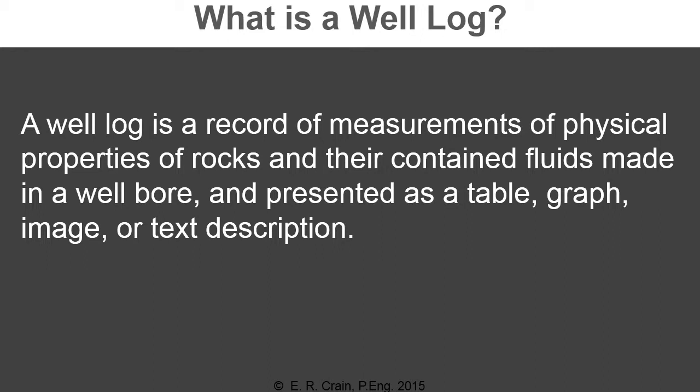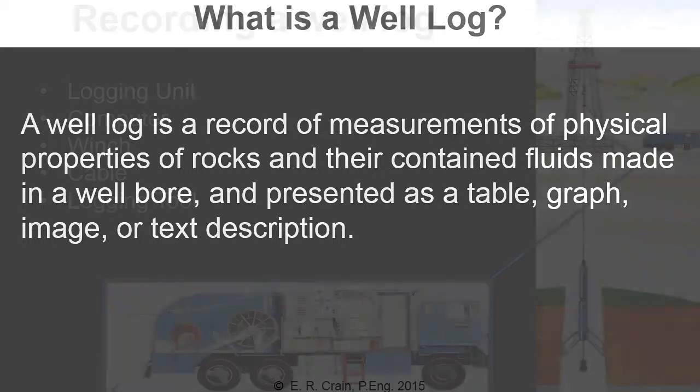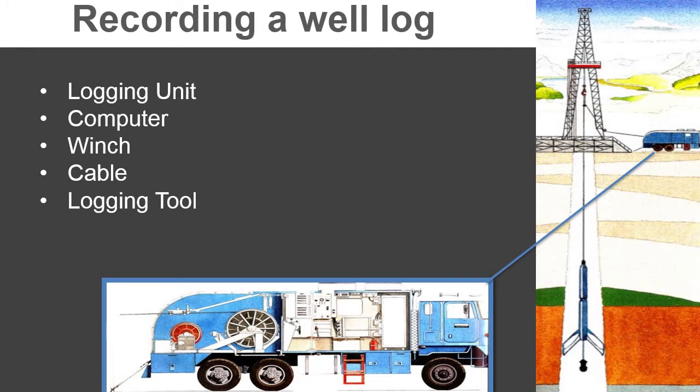The recording of a wireline well log is quite an involved process. The first thing that you'll find at a well site will be the logging unit itself. On land, this is a truck containing a computerized set of logging equipment and a winch that has a cable on it. The cable is strung in the well derrick and run into the bore hole. At the end of the cable is the logging tool set, which often has numerous measurement systems on a single set of tools in the well bore.